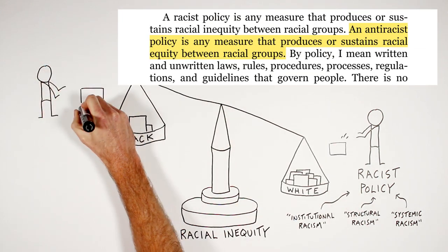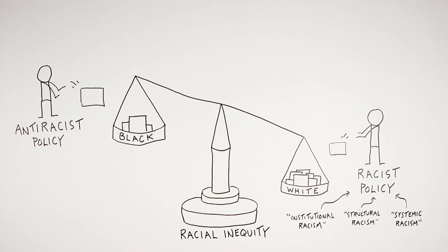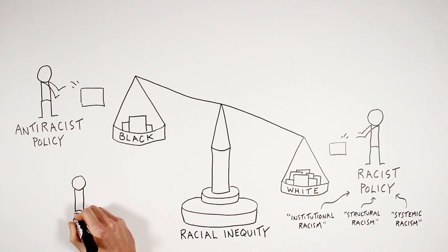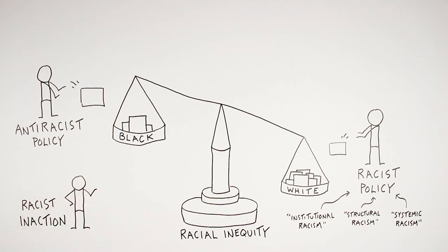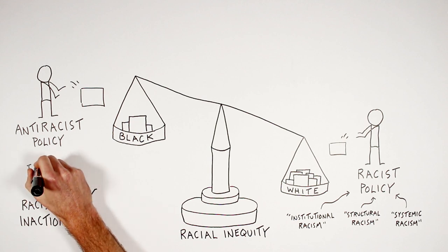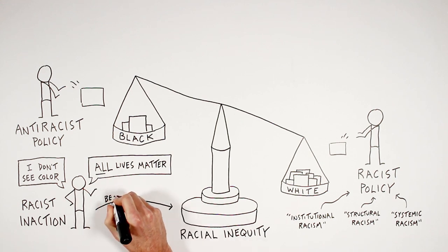In contrast to a racist policy, an anti-racist policy is any measure that produces or sustains racial equity between racial groups — policies that actively try to create racial equity, or maintain racial equity where it currently exists. Our work then is to get to know very deeply the racial inequities that exist and put into place those anti-racist policies that address them. In addition, there is also such a thing as racist inaction. Two phrases in particular stand out: 'I don't see color' and 'all lives matter.' Those statements represent racist inaction because they sustain the inequity that is clearly in front of us.